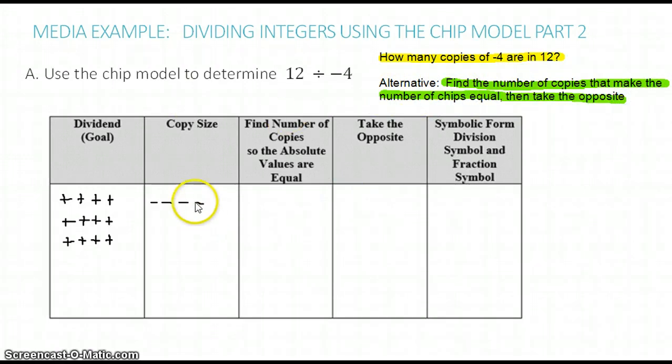So here's what I mean. Let's take copies of negative 4 until we have the same amount of CHIPs as the dividend. So there's one copy, two copies, and three copies. This gives us negative 12.